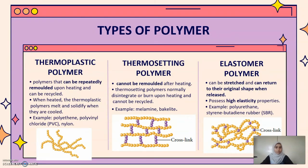There are three types of polymer. First, thermoplastic polymer — a polymer that can be repeatedly remolded upon heating and can be recycled. For example, nylon. Other than that, thermosetting polymer. Thermosetting polymer cannot be remolded after heating. For example, melamine.